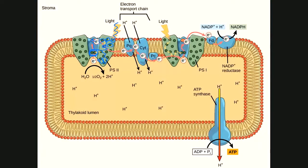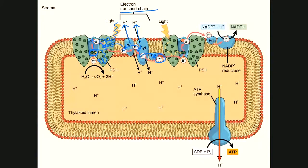Those energized electrons get passed down an electron transport chain — the same idea we saw in cellular respiration. The high-energy electrons get passed from one carrier to the next. As the electrons are passed, they give off a little energy and protons get pumped from one side of the membrane to the other. We'll hold off for now on what the electron's final destination is.